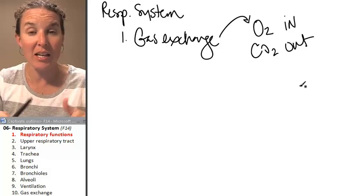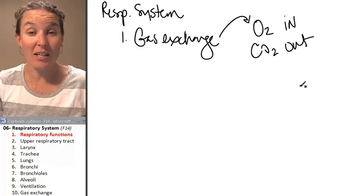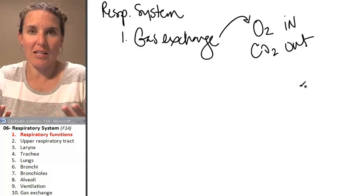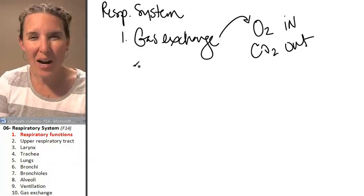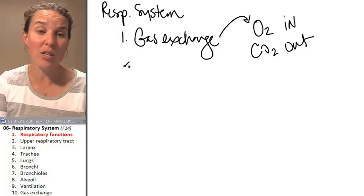Oxygen comes in and gets in the blood, carbon dioxide gets out, gets back into the lungs, and you blow it back out again. Primary function of the respiratory system, but it does some other stuff.